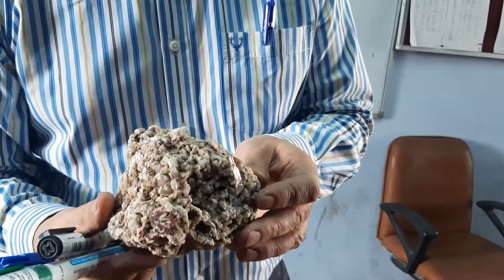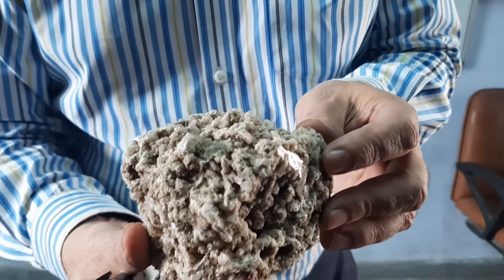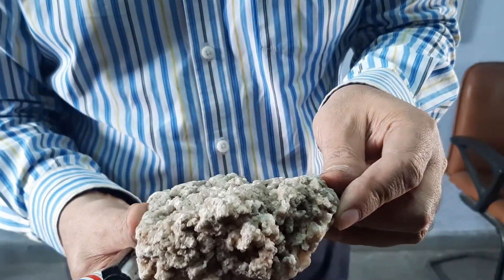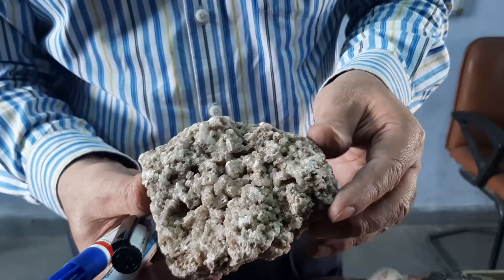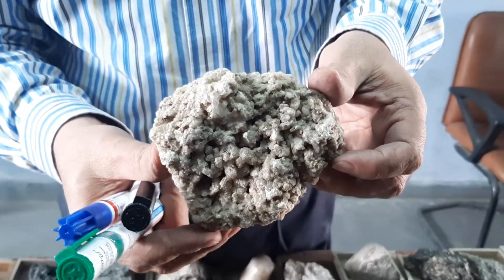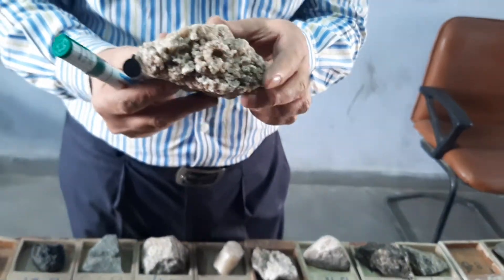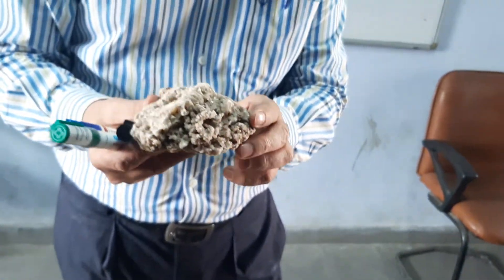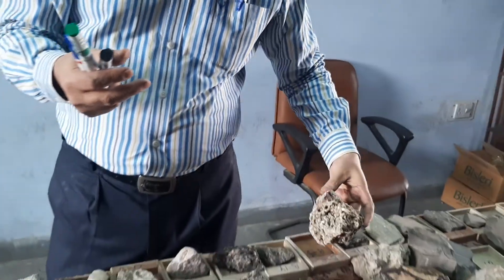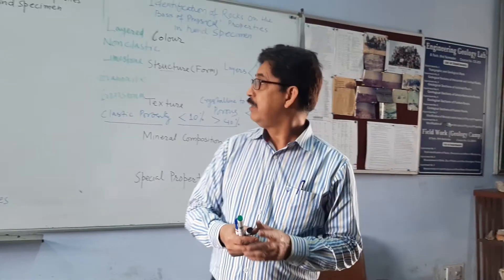I have got one sample of evaporite that I would like to show you. These are the gypsum crystals which have crystallized out of sea water. You can see a lot of porosity in between the different crystals which have grown in different directions. This is a sample of evaporite. I have some other samples also but I am not able to find them.